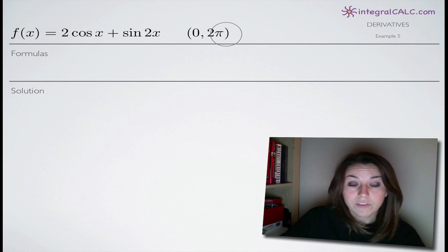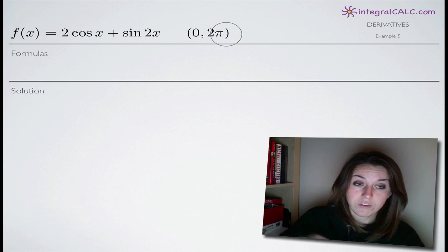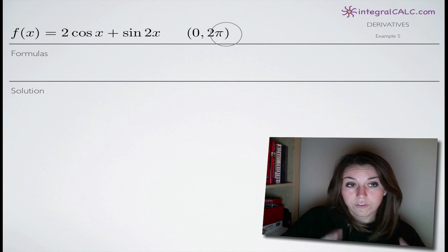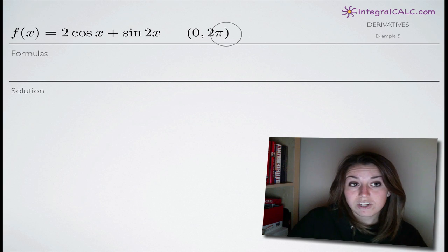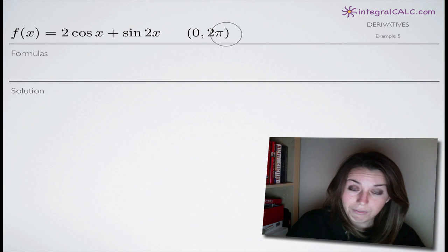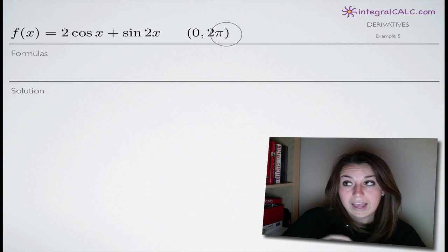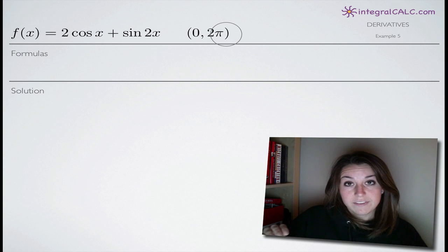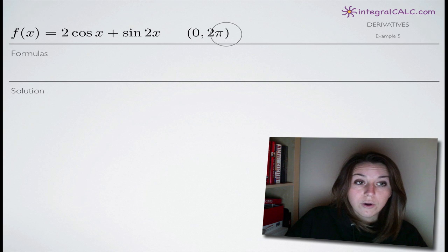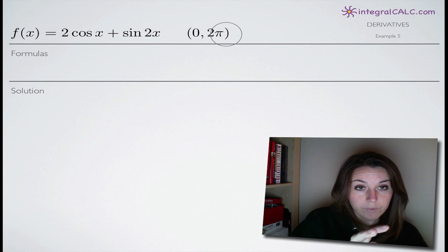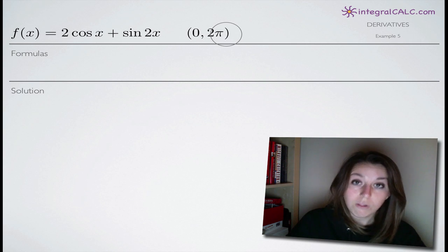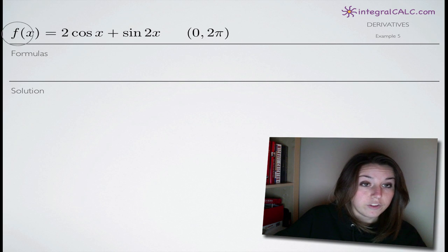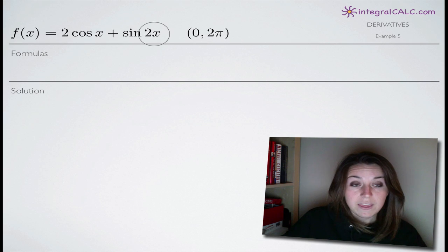They've asked us where the slope of this function is a horizontal line. The slope of the function is by definition the derivative of the function, and the slope of a horizontal line is 0. So we know that the problem is asking us to find all of the points where the derivative of this function is equal to 0.